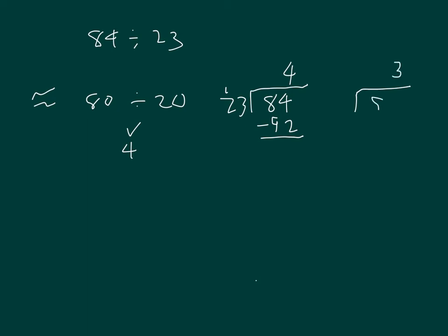And we use 3 instead of 4. 1 lower than 4. 3 times 23 is 69. 9 and a 6. And then we can do our subtraction. We get 15 as our answer there. Remainder is 15. So 84 divided by 23 is equal to 3 with the remainder of 15.